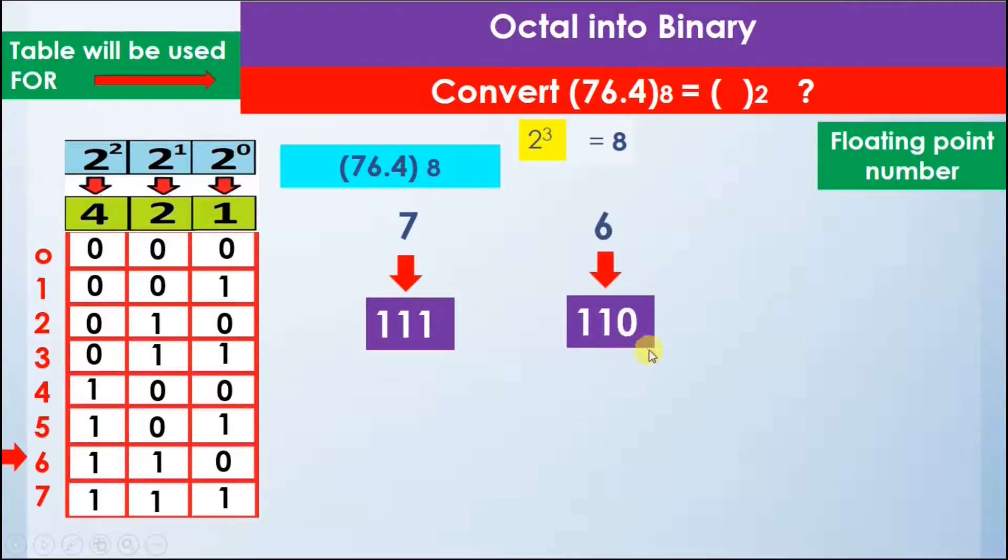Next the decimal point will remain at its position. Now we will find the number 4 in the table. Here is the number 4 and it equals 100 in binary.